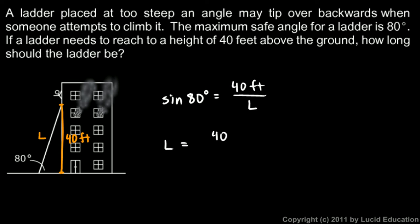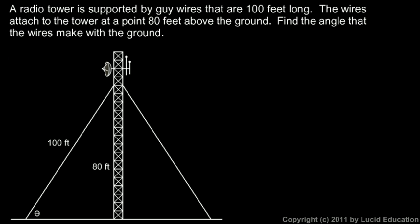Rearranging that algebraically, we get L equals 40 feet divided by the sine of 80 degrees. And on the calculator, that comes out to 41 feet. So a 41 foot ladder will reach 40 feet high. So the ladder doesn't have to be a whole lot longer than the height you're trying to reach.